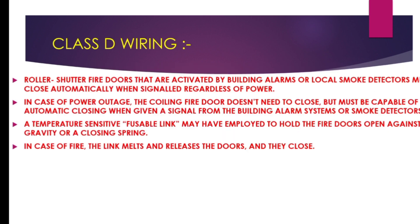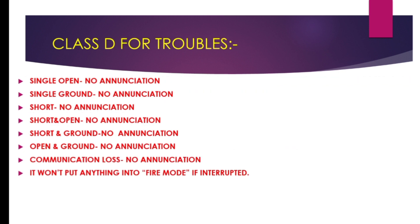Roller-shuttered fire doors that are activated by building alarms or local smoke detectors must close automatically when signaled, regardless of power. In case of a power outage, the coiling fire door doesn't need to close but must be capable of automatic closing when given a signal from the building alarm systems or smoke detectors. A temperature-sensitive fusible link may be used to close fire doors held open against gravity or closed by a spring. In case of fire, the link melts and releases the doors, and they close.